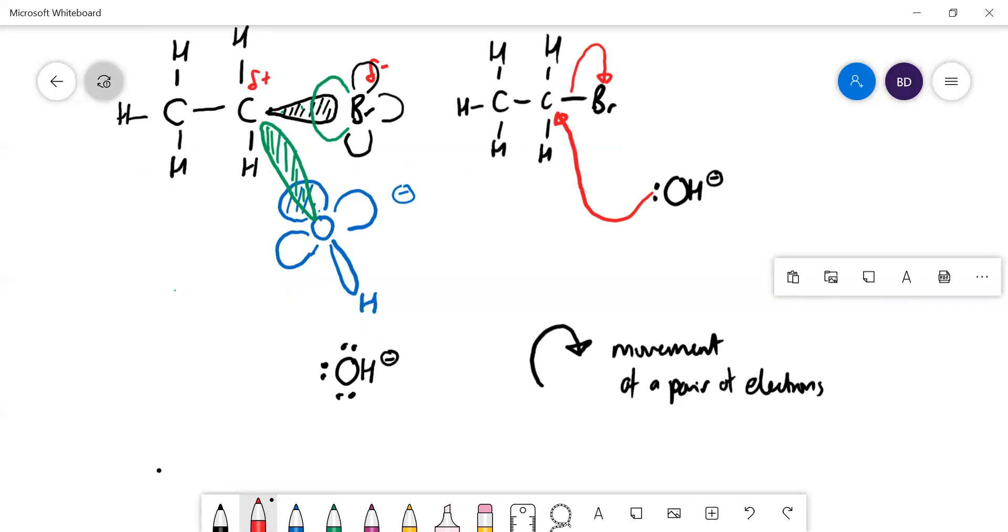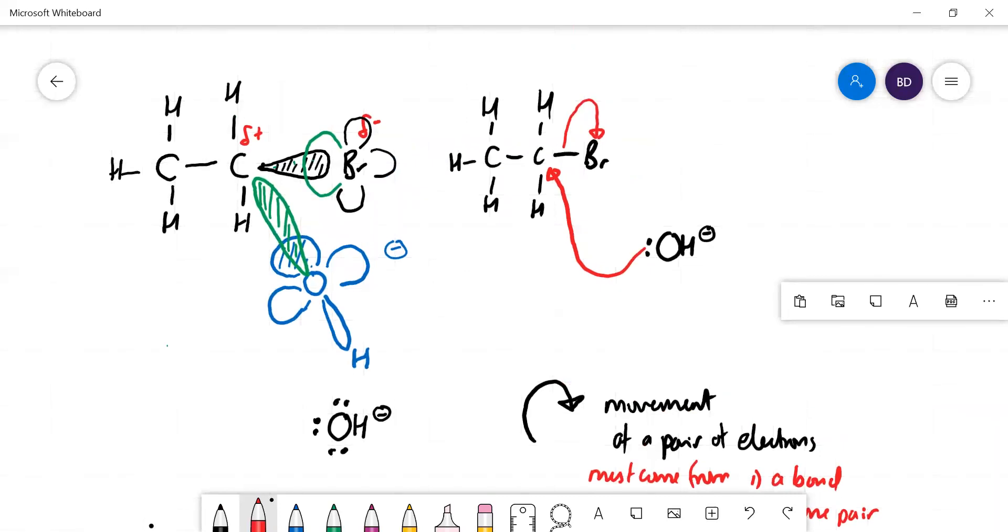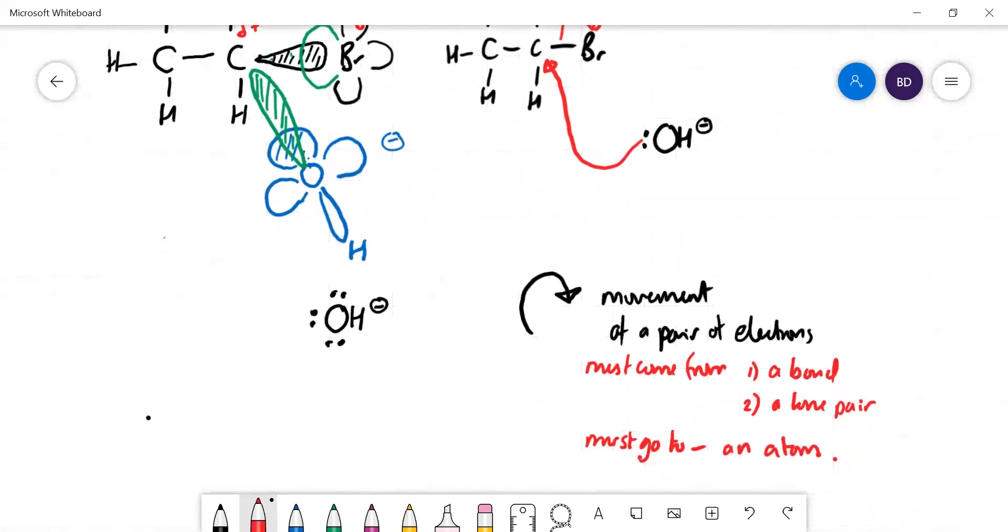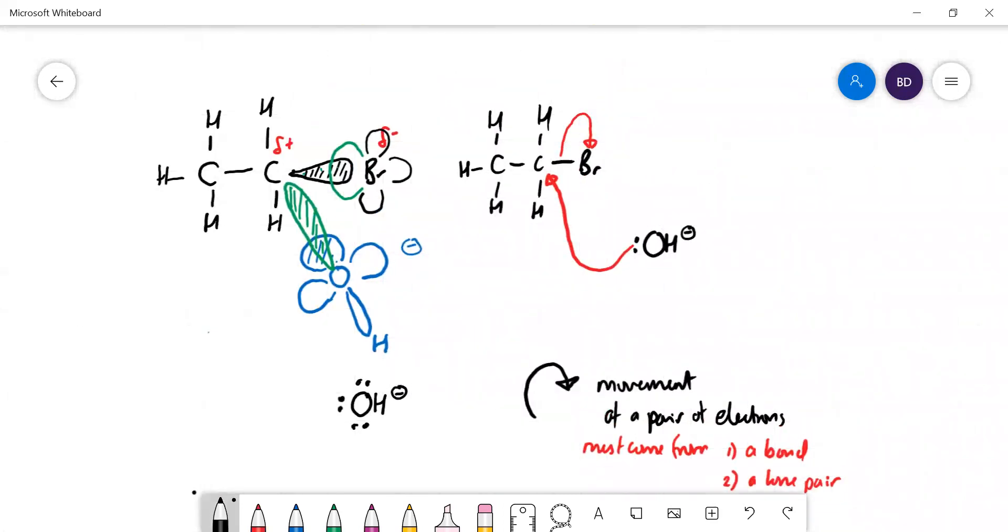These curly arrows are showing movements of pairs of electrons. They must always come from either a bond or a lone pair, and you always draw them going to atoms. When you look in mark schemes, they ask you to draw a reaction mechanism - they're very picky about where the arrows come from. They must stick with those rules. They've got to come from a bond or a lone pair, and they must go to an atom.